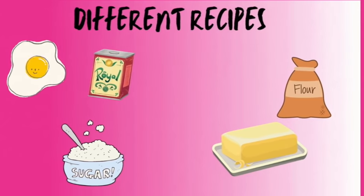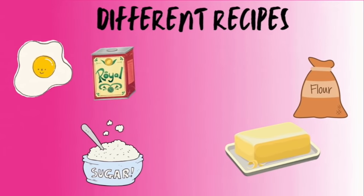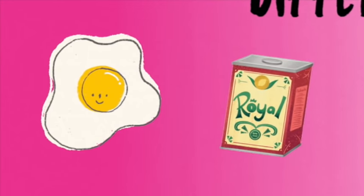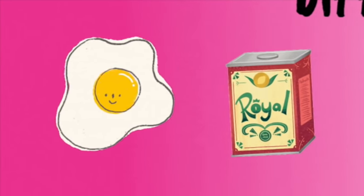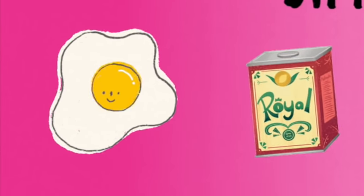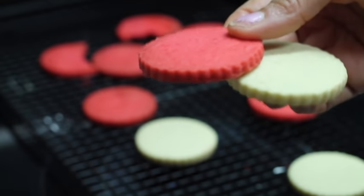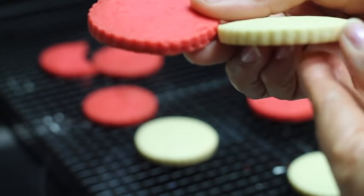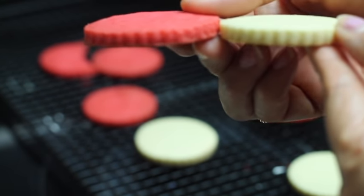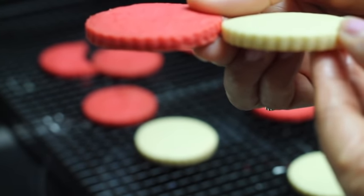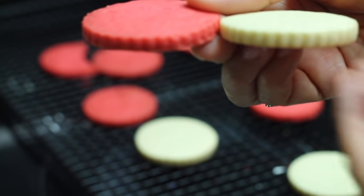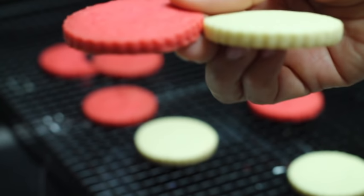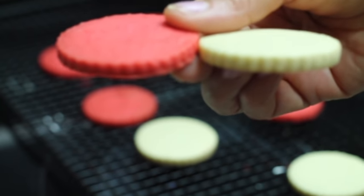Let's dig a little deeper to see what are the factors that make these cookies so different. Shortbread cookies do not have eggs, leavening, or baking powder in the recipe. When I roll out the cookie dough at the same thickness, the sugar cookie is a little bit thicker than the shortbread cookie. As a result, the shortbread will have a more flat and rough surface, and it's going to be more on the drier side.